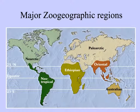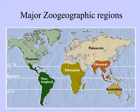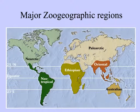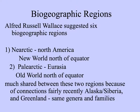Nowadays, we recognize these major zoogeographic regions that explain animal diversity patterns: Nearctic, Neotropical, Ethiopian, Palearctic, Oriental, and Australian. These were suggested by Alfred Russell Wallace.